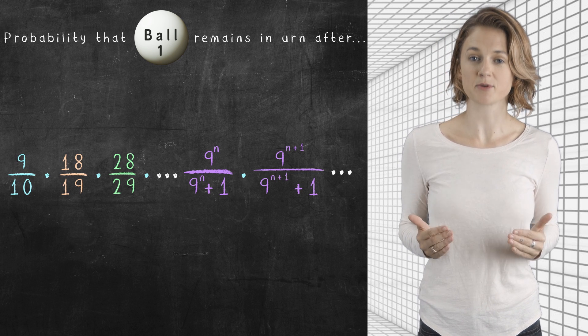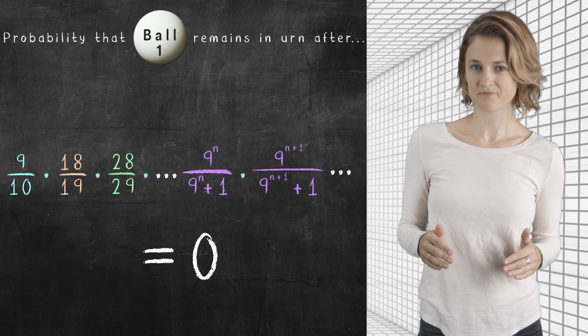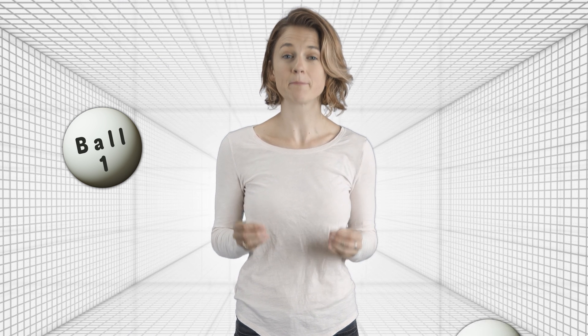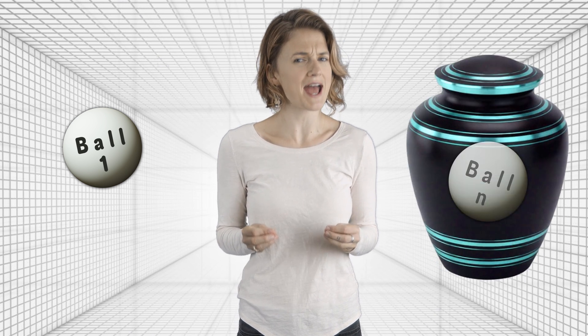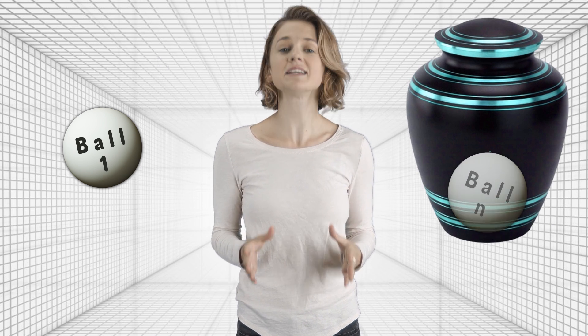Multiplying these infinitely many numbers together, we get zero. Details in the description. There was nothing special about ball number one. We can do a similar calculation for any other ball, and the result will be the same. For any natural number n, the probability that ball number n will remain in the urn at noon, after the infinitely many tasks are completed, is zero.